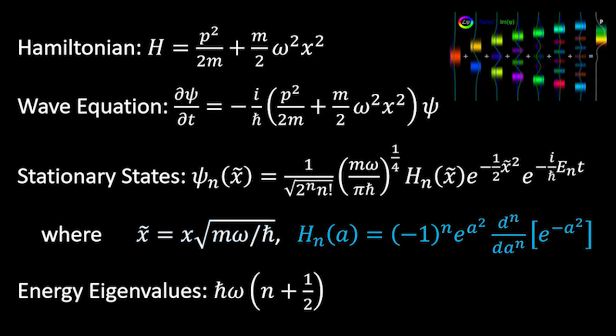Now, the H sub n term is what we call the nth order physicist's Hermite polynomial. You can find a list of these polynomials on Wikipedia, link in the description below, or you can calculate them yourself using the formula shown here. I know it looks kind of complicated and esoteric, but if you take a look at the first few of these Hermite polynomials, you'll see like, okay, yeah, they're just polynomials. Nothing too special there.